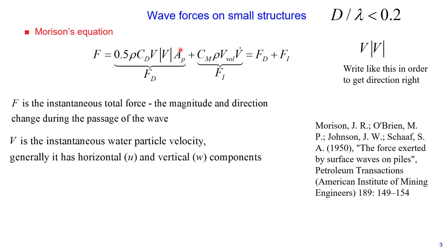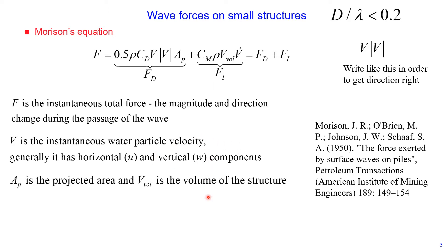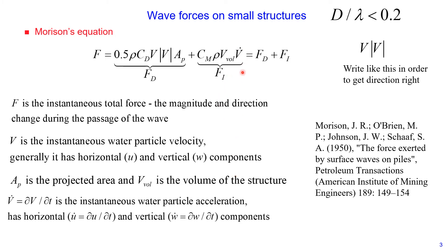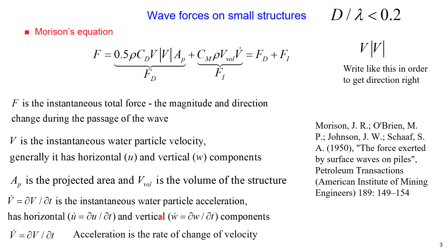V is the instantaneous velocity of the water particle. We take components of instantaneous velocities — horizontal velocity component U and vertical component W. AP is the representative projected area, and V with index 'wall' is the volume of the structure. V-dot is the instantaneous water particle acceleration, defined as the rate of change of velocity in time, with horizontal component U-dot (DU/DT) and vertical component W-dot (DW/DT).